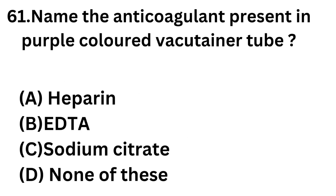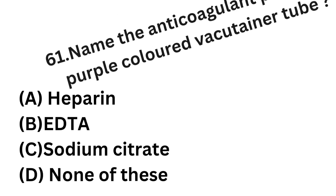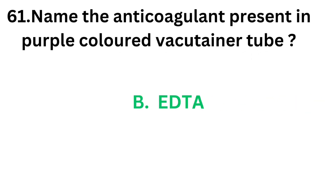Question number 61: Name the anticoagulant present in the purple colored vacutainer tube. Option A: Heparin. Option B: EDTA. Option C: Sodium citrate. Option D: None of these. Heparin is green color. So the correct answer is option B, EDTA. EDTA anticoagulant is in the purple colored vacutainer tube.